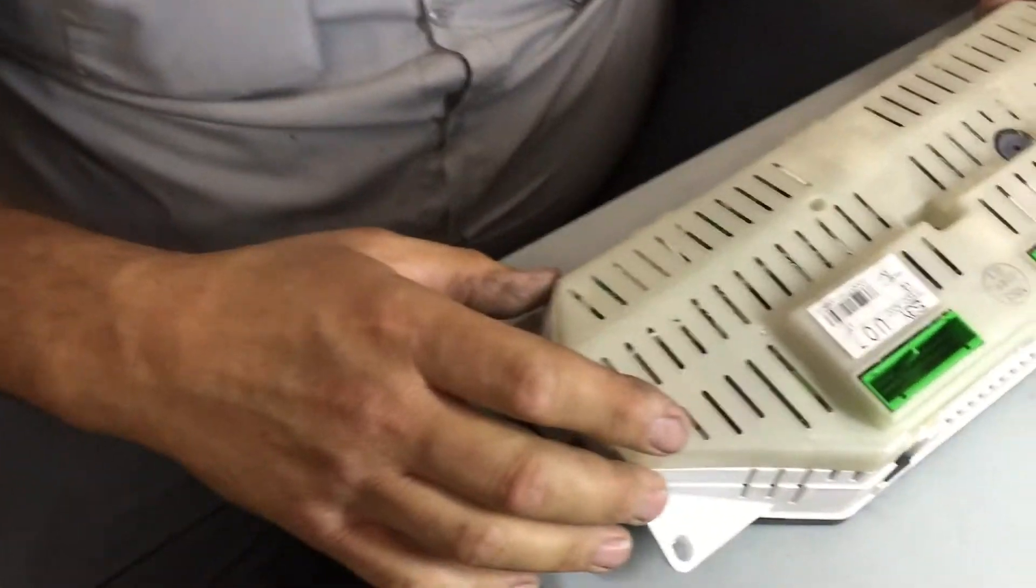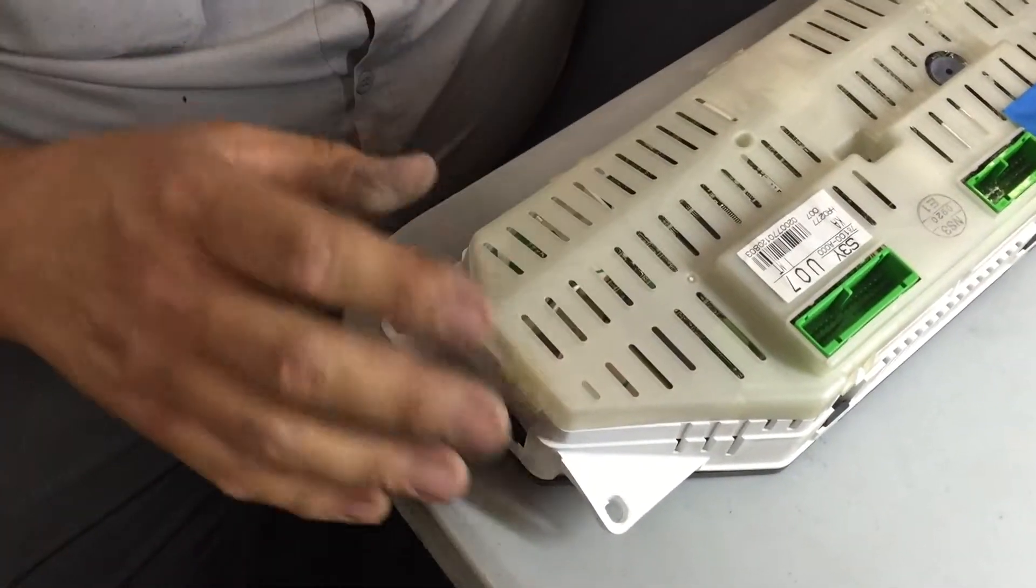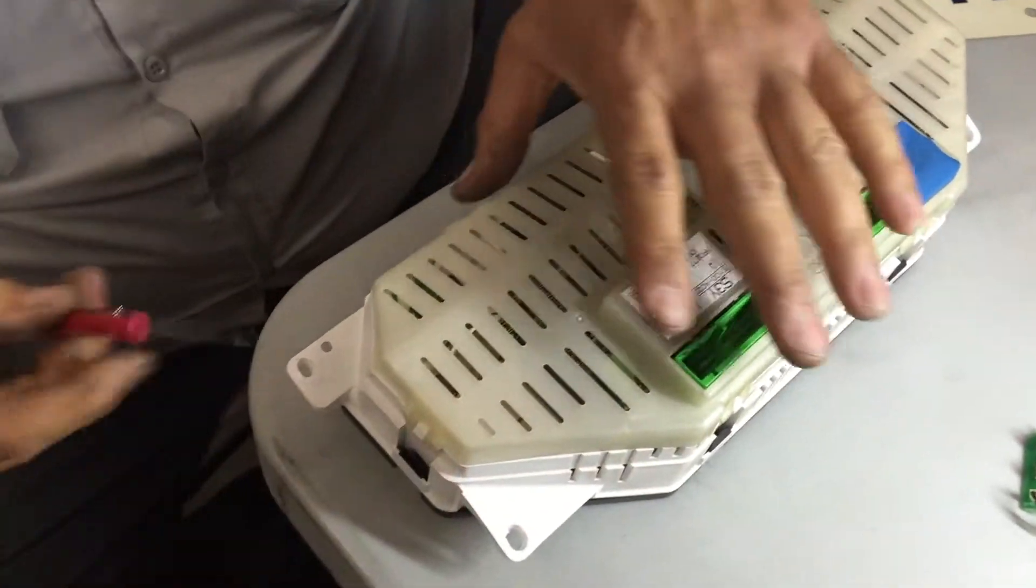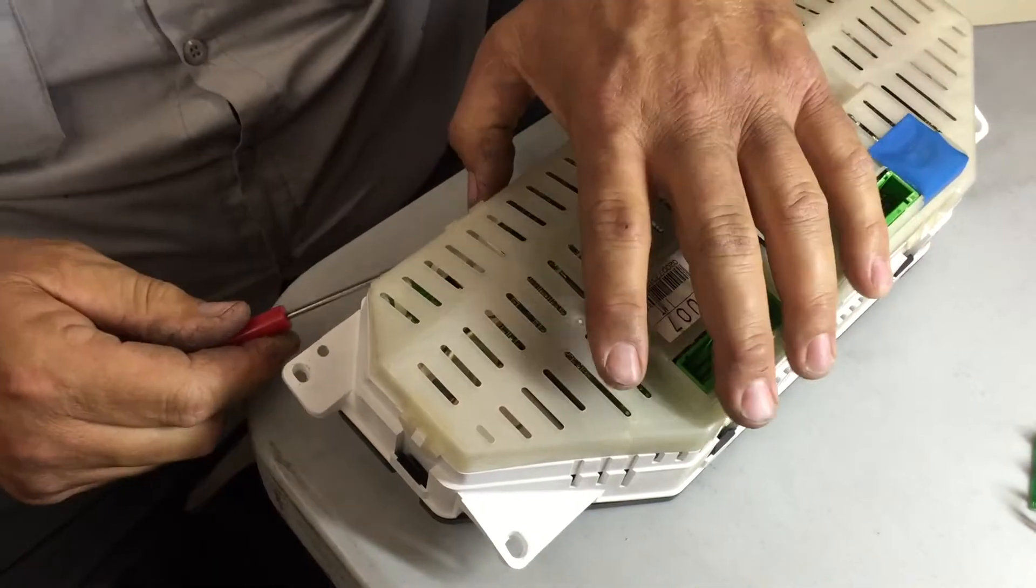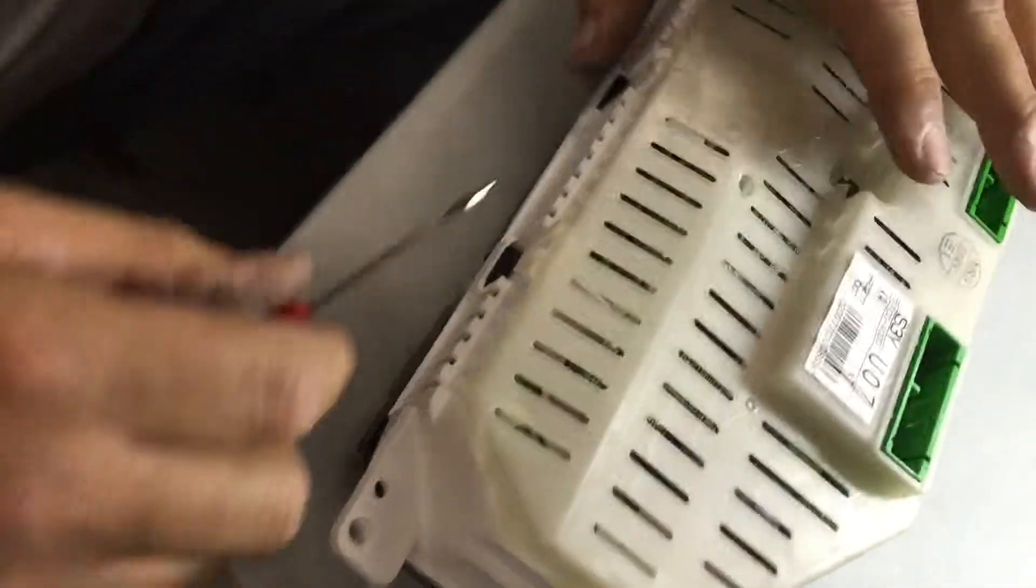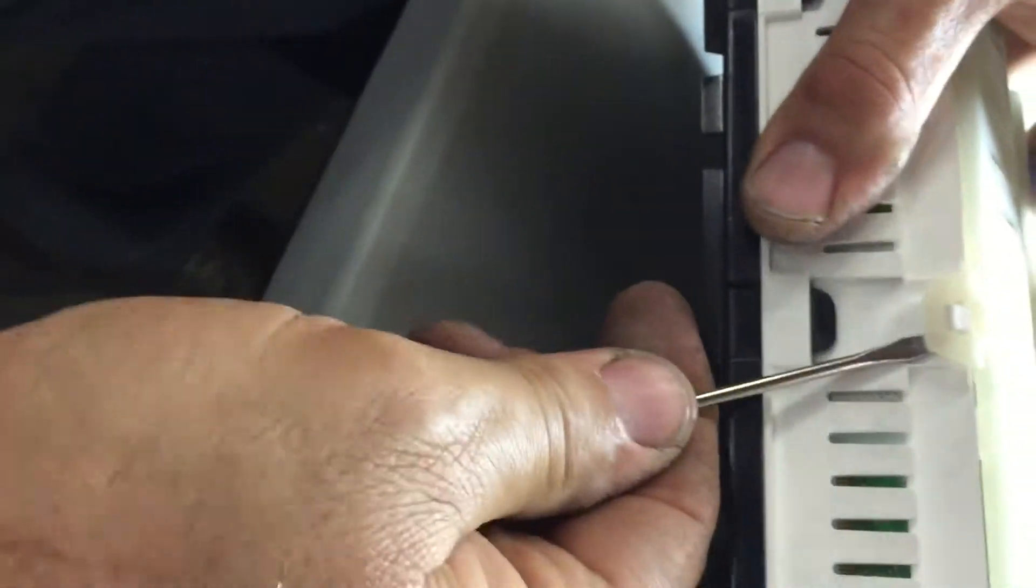There's a plastic back on this, and there's about eight tabs that we have to lift up a little bit around the edges here, and there's one in the center that you have to lift as well. So we're going to gently pry the little tabs up on the cluster here to get the back off.